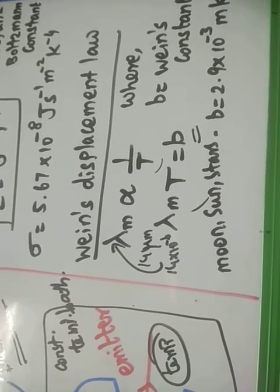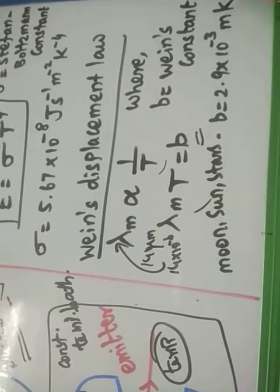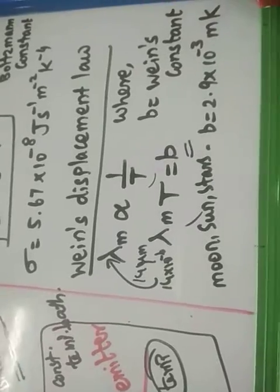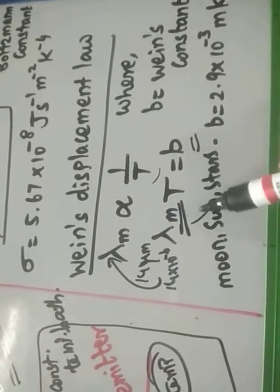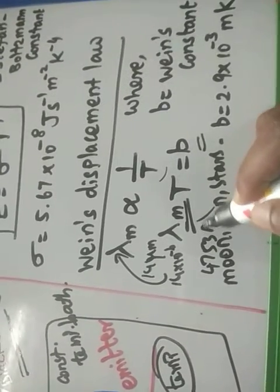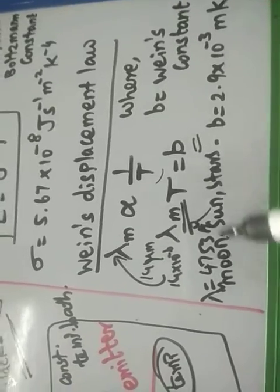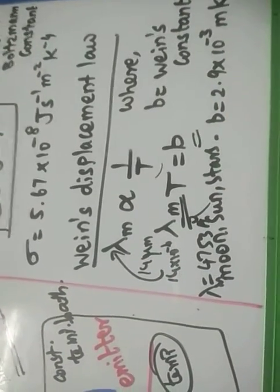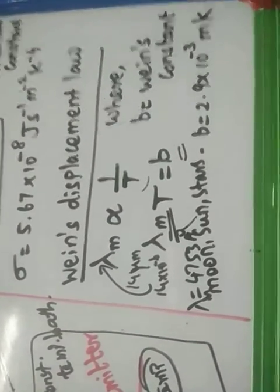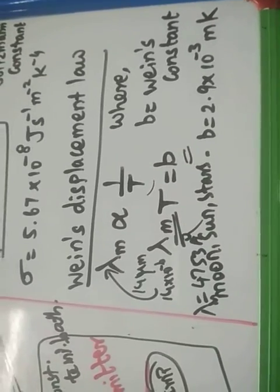Similarly, we can calculate the surface temperature of the sun. The maximum radiation emitted by the sun has a wavelength of around 4753 Ångströms. Using that value in Wien's displacement law, we can calculate the outer surface temperature of the sun — not the core temperature — which comes out to around 6000 Kelvin.